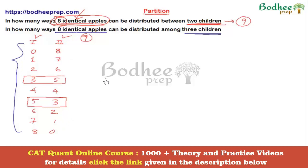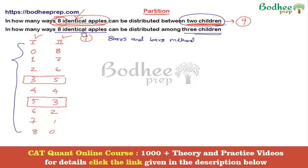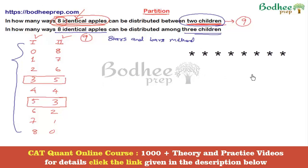There must be an alternate way, so let us come back to question number one and apply the stars and bars method. We take the eight identical apples — represented as eight stars — and since we are distributing among two children, we take one partition or bar and place it somewhere. This bar divides the eight apples into the number on the left side and the number on the right side of the bar.